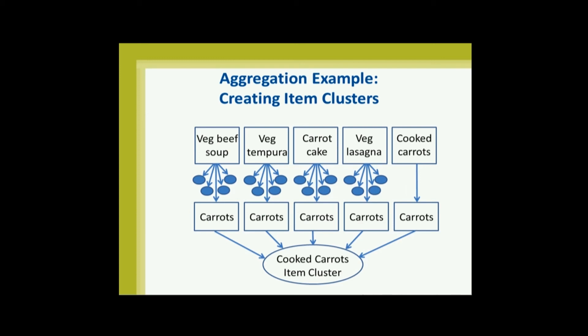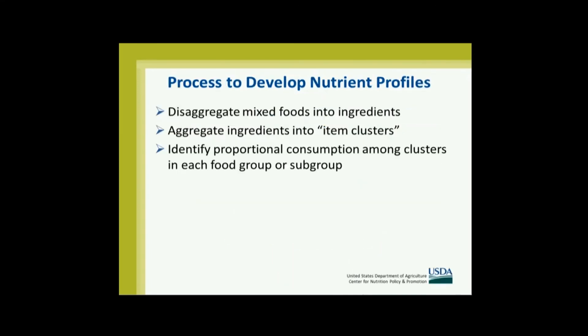It's fascinating to see how many places cooked carrots show up. There are plain cooked carrots, yes, but also vegetable beef soup, vegetable tempura, carrot cake, vegetable lasagna — I think about 70 or 80 sources. All of them contain carrots. So we take the amount of carrots out of each one of those foods and put it all together to get a consumption value for cooked carrots. Someone could never eat any plain cooked carrots but consume quite a bit of cooked carrots. We identify how much of the consumption from that food group comes from each item cluster.